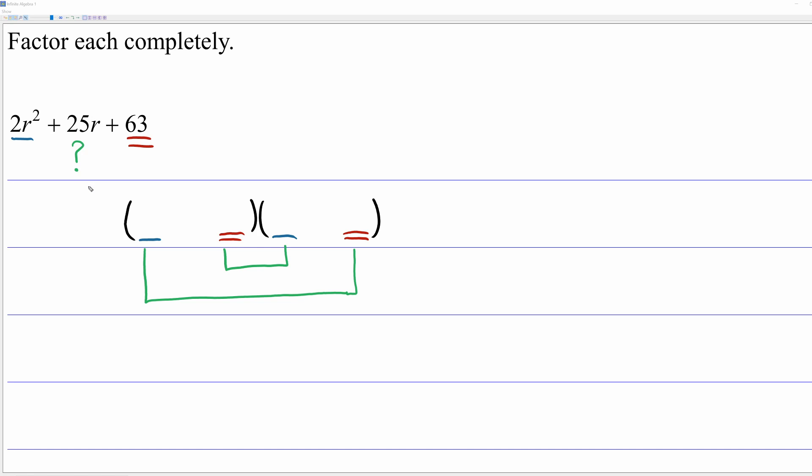So luckily, 2r squared, well, 2 is a prime number. So the only possibilities that we have for the blue blanks are 2r times r. But we have lots of possibilities for the red blanks. And again, this is trial and error, mental math. Actually, write this down lightly in pencil. Have yourself a good eraser.